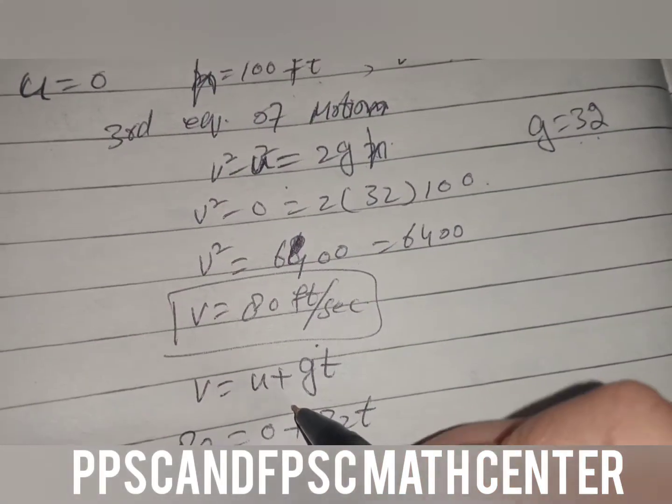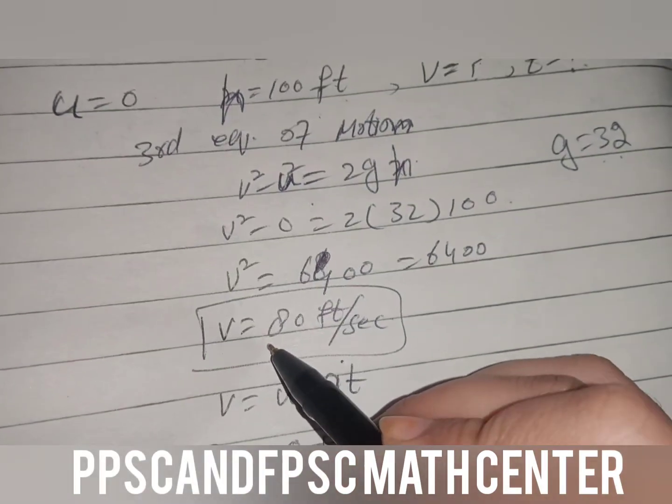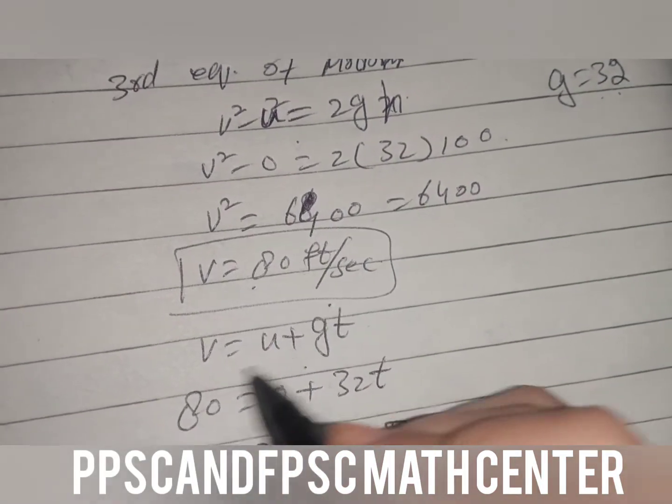So I've used the third equation of motion to find the speed and velocity. v² = u² + 2gh, v² = 0 + 2(32)(100), v² = 6400, v = 80 feet per second.